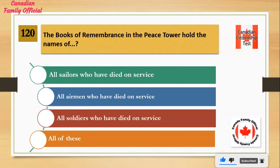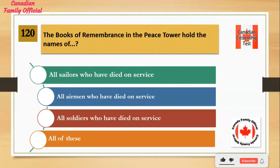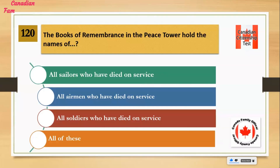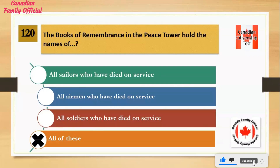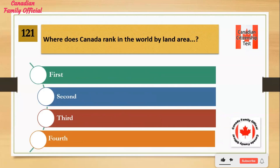The Books of Remembrance in the Peace Tower hold the names of: Number 1: all sailors who have died on service. Number 2: all airmen who have died on service. Number 3: all soldiers who have died on service. Number 4: all of these. And the answer is all of these.